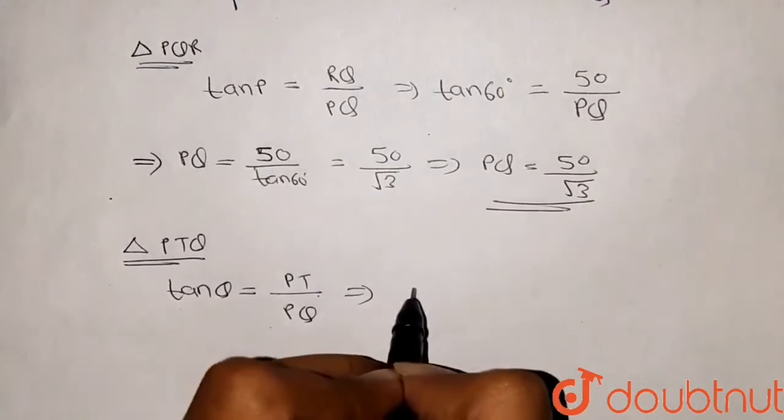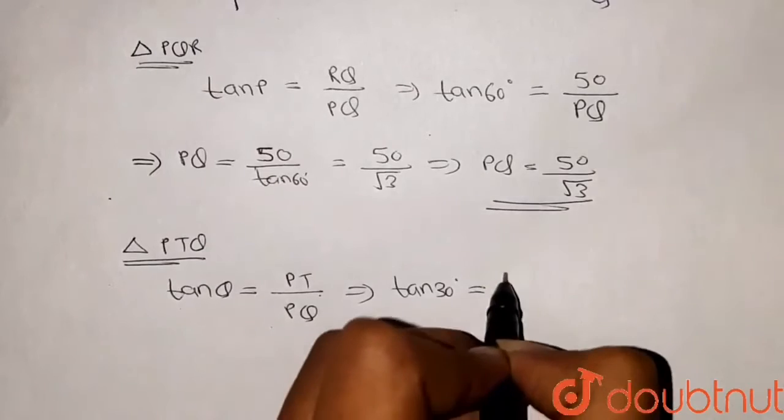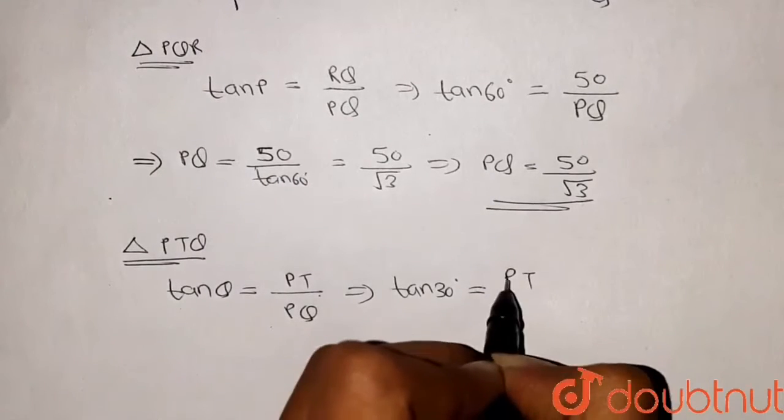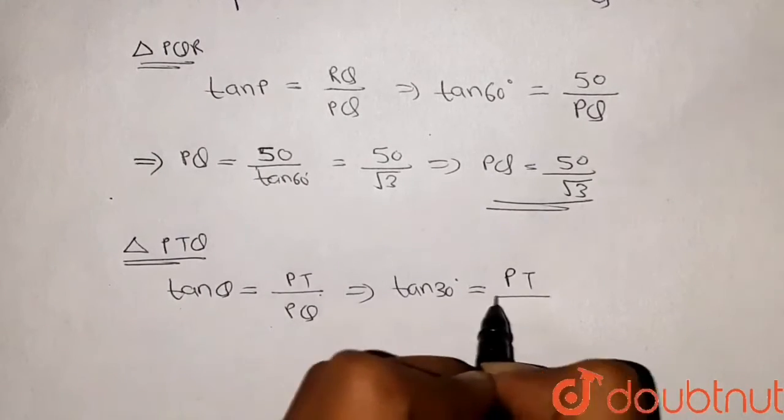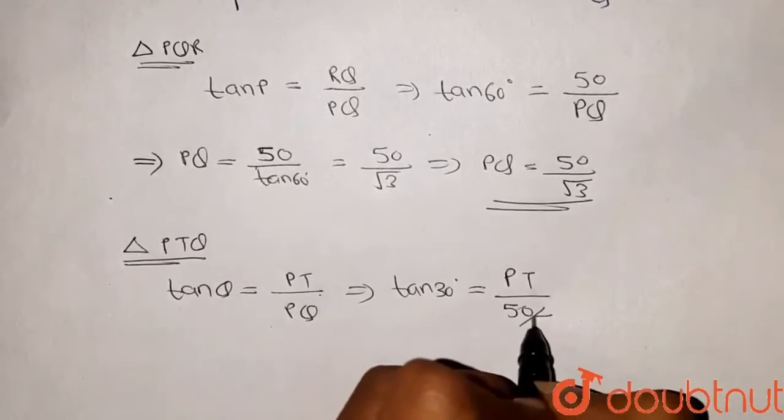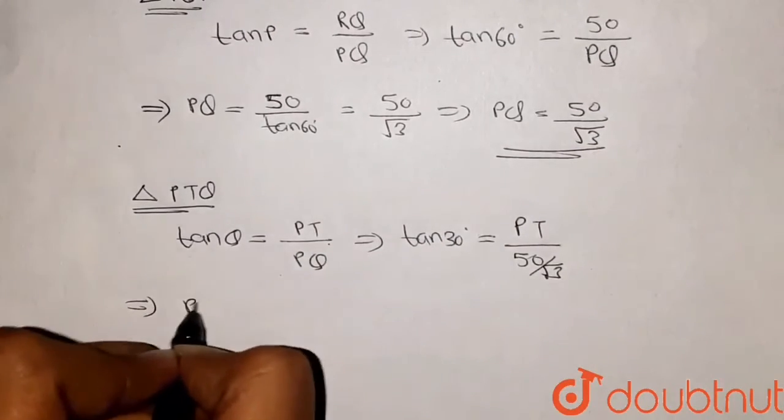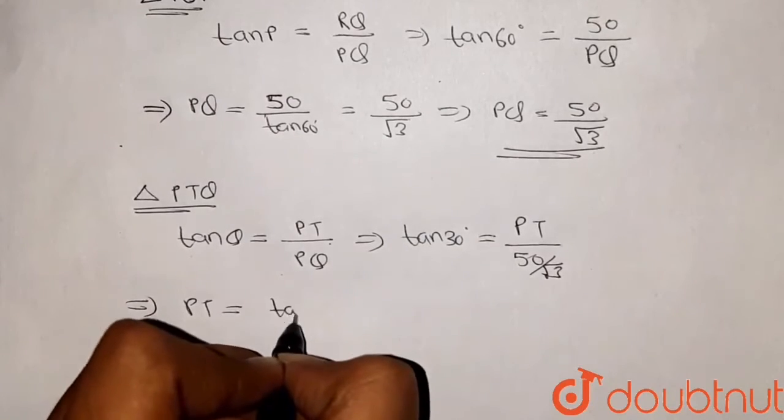We have to find out the height of this tower PT. So PQ is 50 divided by root 3, so from here I can write that PT should be equal to tan of 30 degrees